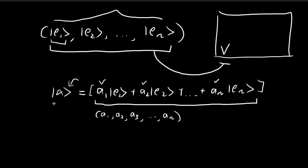So for any given vector, there is only one possible set of scalars that you would use to multiply the vectors within the basis to obtain a linear combination equal to alpha. We're going to have to prove that these scalars are unique.